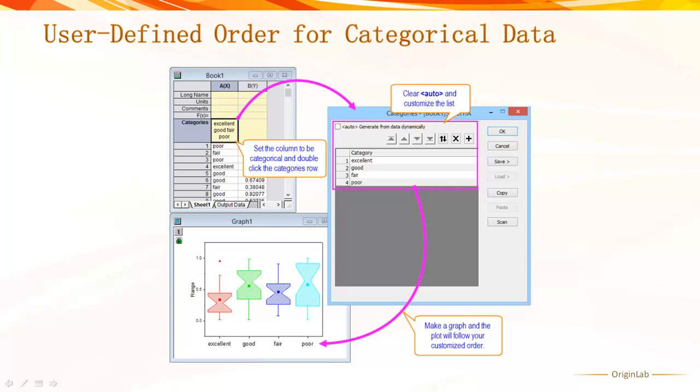In Origin 2015, after setting a column as categorical, you can double-click the new category's Label Row cell to customize the categorical order. You can add or delete extra values in the order. The associated graph or analysis will follow the user-defined categorical order. Changing it will update the graph and analysis automatically.